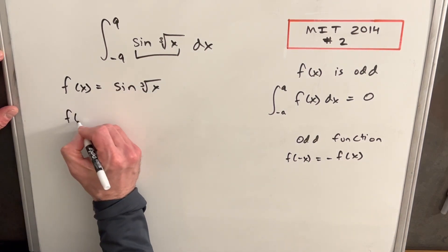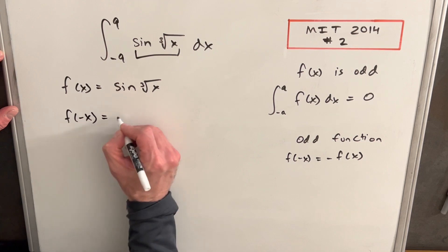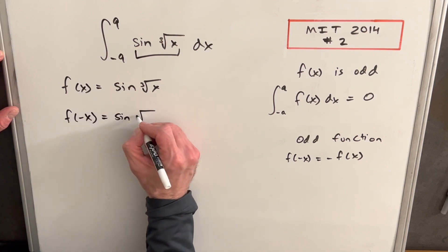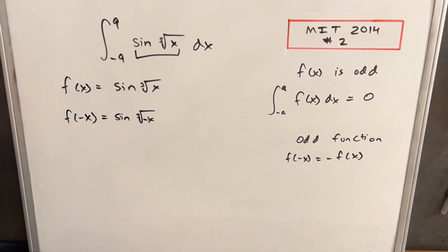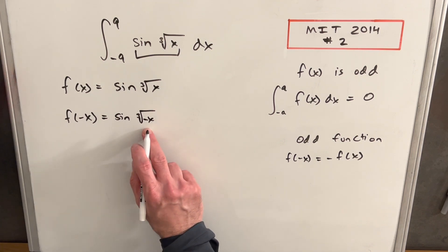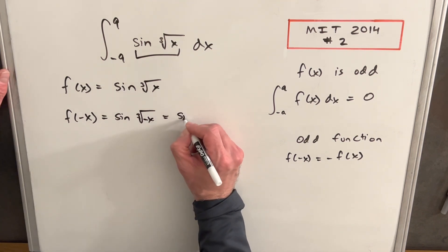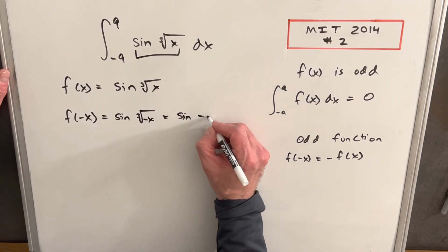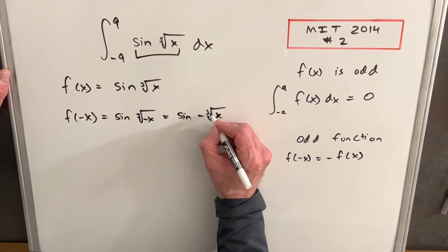So I'm going to plug in a negative x into our function, so we're going to have sine cube root of minus x. And then because this is a cube root, we could just pull the minus out of here and so we could write this as sine minus cube root x.